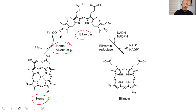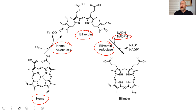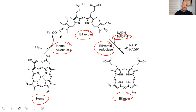Heme turns into biliverdin. And then biliverdin — remember this too — via the enzyme biliverdin reductase, because it uses reducing agents largely from the pentose phosphate pathway, also used to recycle glutathione from its oxidized form to its antioxidant form, can turn into bilirubin. It's important to understand this pathway and the enzymes, because if someone has low bilirubin, we might need to seek ways of trying to increase their bilirubin.